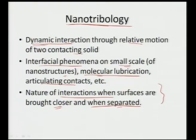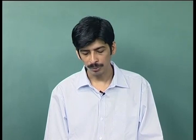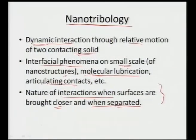Nanotribology is defined by dynamic interaction through relative motion of two contacting solids, with interfacial phenomena specifically at the small length scales of nano structures, since nano structure defines the contact between the two mating surfaces. This is essential for understanding molecular lubrication, engineering articulating contacts, and even micro-electro-mechanical systems. We can see how contact leads to damage and also how the nature of interaction when surfaces are brought closer or separated — both are now constituted in nanotribology.